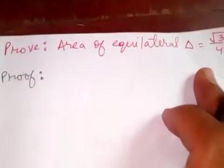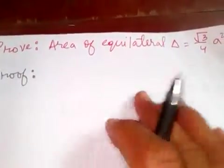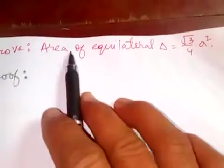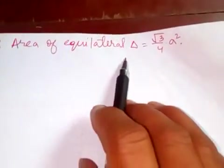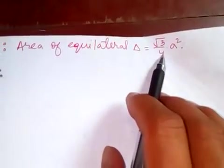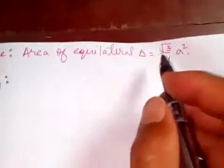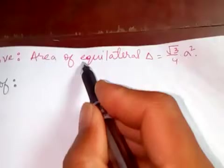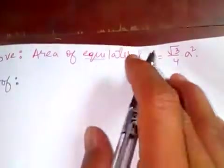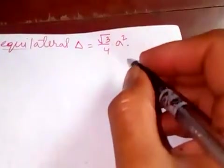Hi friends, today I'm going to prove a very important formula of geometry: the area of an equilateral triangle is √3/4 × a², where the word 'equi' stands for equal. So in an equilateral triangle, we know...